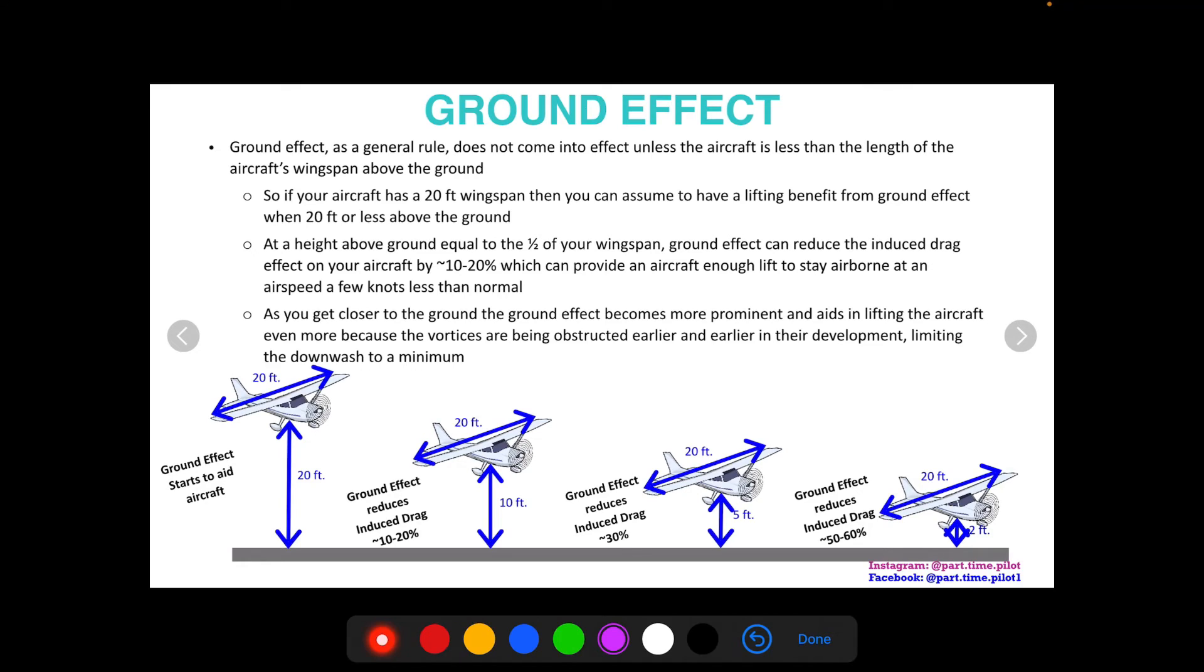As you get closer and closer to the ground, the effect becomes more prominent and aids in lifting the aircraft even more because the vortices are being obstructed earlier and earlier in their development, limiting the downwash to a minimum. So at about a quarter of the wingspan, about five feet in this example, the ground effect can reduce induced drag by around 30 percent. And then when you're a tenth of your wingspan, real close, about two feet, it's about 50 to 60 percent reduction in induced drag. So you can really remain airborne at less speeds when you're that close to the ground.